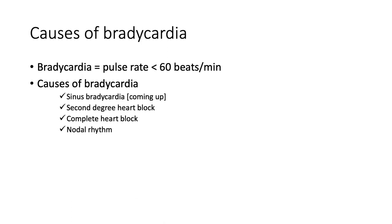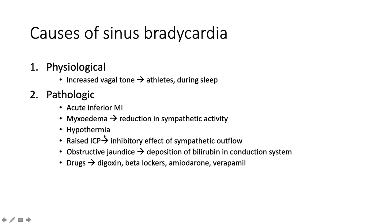Bradycardia means a slow heart rate below 60 beats per minute. Varieties include sinus bradycardia, second degree heart block, complete heart block, or nodal rhythm. Causes of sinus bradycardia — physiological: increased vagal tone as seen among athletes, or during sleep. Pathological: acute inferior MI because the RCA supplies the sinus node. Myxoedema due to reduced sympathetic activity. Hypothermia. Raised intracranial pressure giving Cushing's triad: bradycardia, hypertension, and abnormal respiration — due to inhibitory effect on sympathetic outflow. Obstructive jaundice causes bradycardia due to deposition of bilirubin in the conduction system. Drugs like digoxin, beta-blockers, amiodarone, and verapamil.